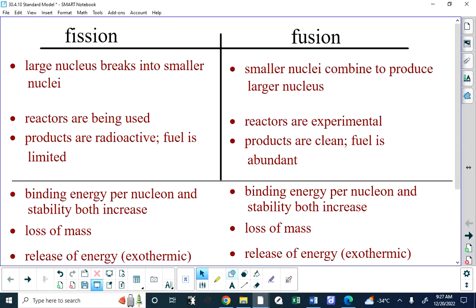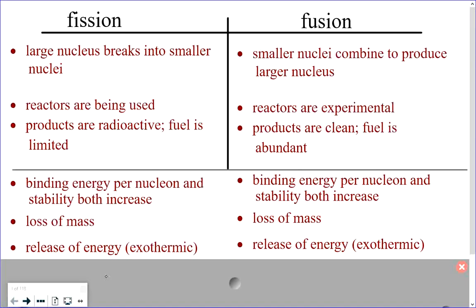When you're talking about radioactive products like krypton and barium, the half-life could be millions of years, which means it will be ticking away for a very long time. However, the products of nuclear fusion are generally clean. Another disadvantage of fission is that the fuel is limited, whereas the fuel for fusion is very abundant. Both processes involve a loss of mass and therefore a release of energy, meaning the binding energy per nucleon increases.